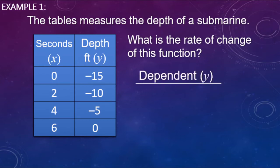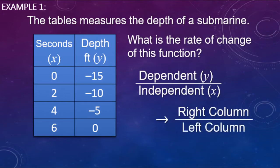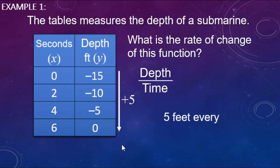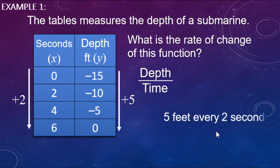We're looking at the dependent variable — which is Y — versus the independent variable, seconds — which is X. The dependent variable is always in the right column and the independent variable always in the left column. Looking at the depth data, we're going from negative 15 to negative 10 to negative 5 to 0 — that's going up by 5 each row. The time in seconds goes 0, 2, 4, 6 — going up by 2.